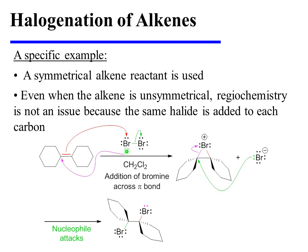Simultaneously, the bromine atom that is being added to the substrate attacks the carbon of the alkene that would otherwise have lost a bond. This results in the formation of the cyclic bromonium ion, which is then attacked by bromide so as to open the bromonium ion, yielding the vicinal dibromide product.